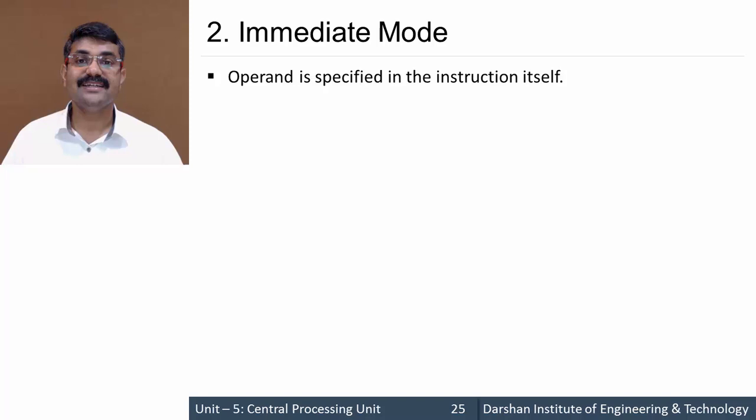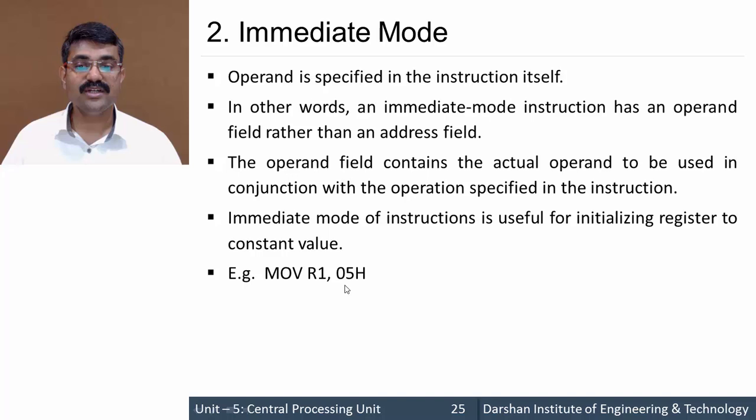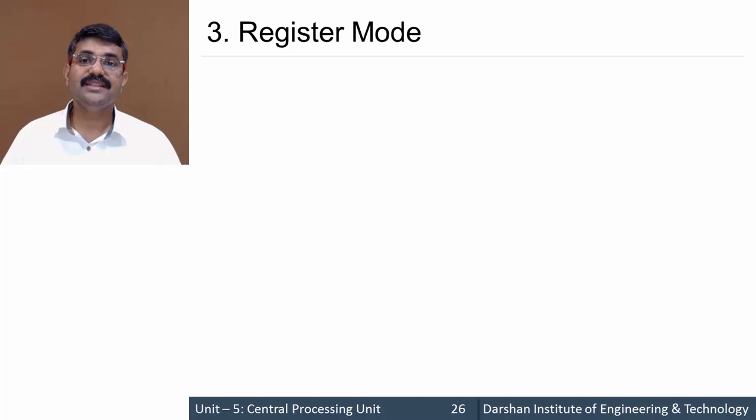The second mode is immediate mode. In immediate mode the operand is specified in the instruction itself. For example, MOV R1, 05H — here 05 is the data (the operand), not an address. The hex data 05 is to be copied to R1. We have specified the operand explicitly and the operand is the data itself, so it is termed immediate mode.